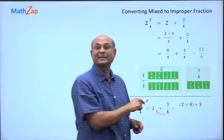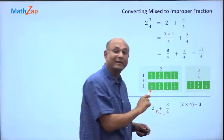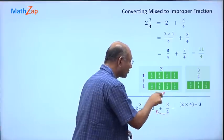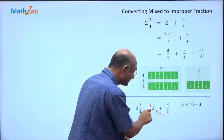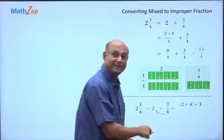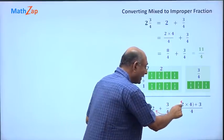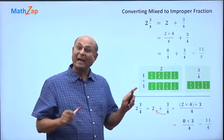Totally how many pieces did I get? I got 11 pieces. How? 2 gave me 4, 4, 2 times 4, 2 times 4 pieces, plus 3 pieces of 1 by 4.